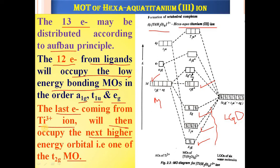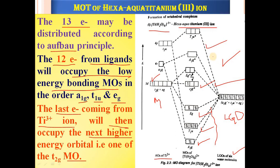In exams, you may be asked to write a note on the molecular orbital diagram of [Ti(H₂O)₆]³⁺. In this diagram, the atomic orbitals of Ti³⁺ are on the left side and the ligand group orbitals of the 6 water molecules are on the right side. The middle part shows the molecular orbitals, divided into bonding at lower energy, non-bonding in the middle, and anti-bonding at the upper level.